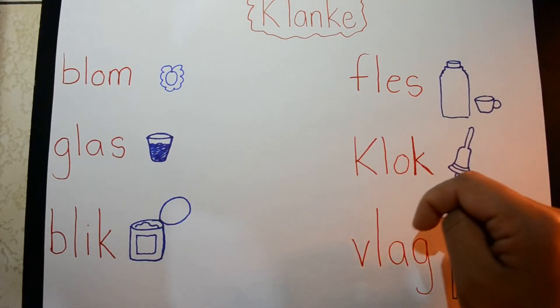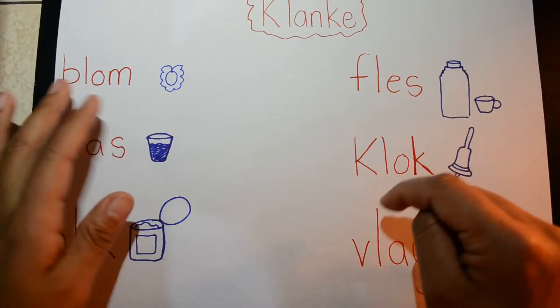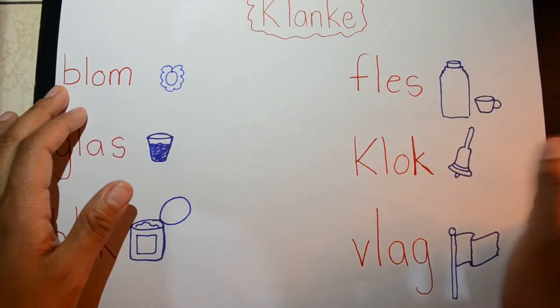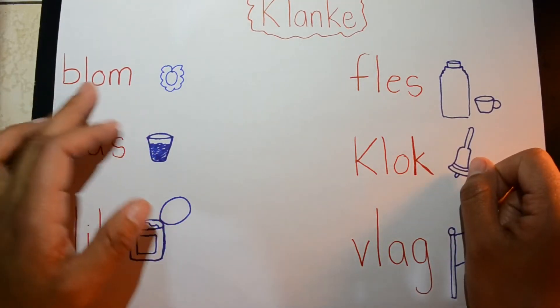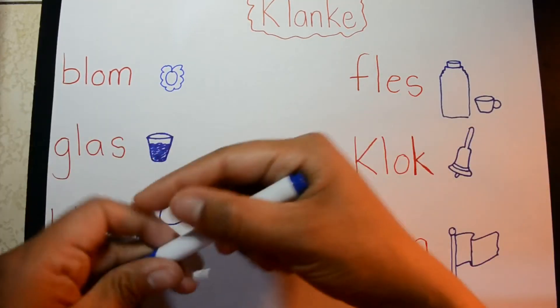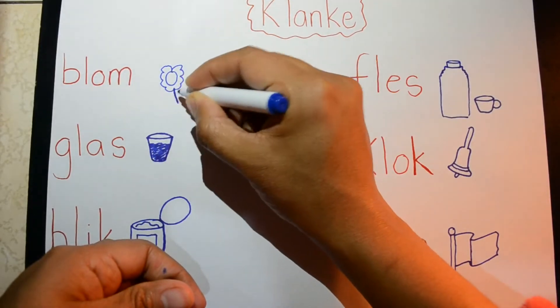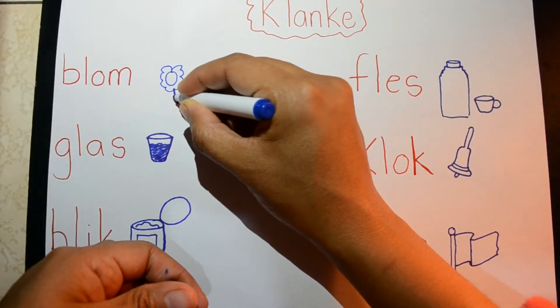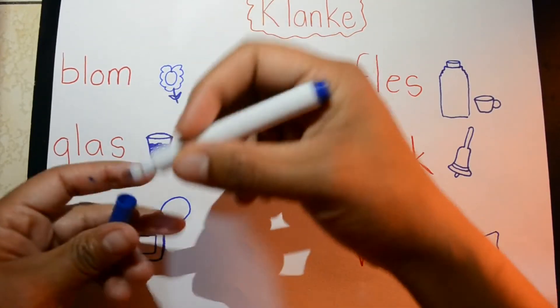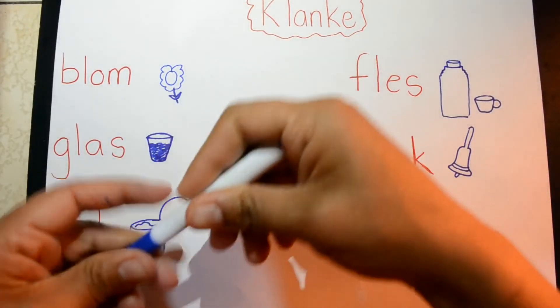Okay, so the first word is blom. Blom. And that is a flower. That's a flower, blom.